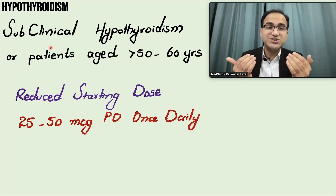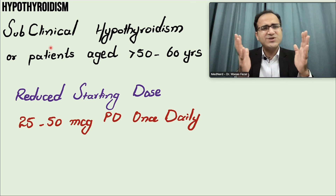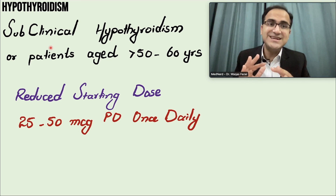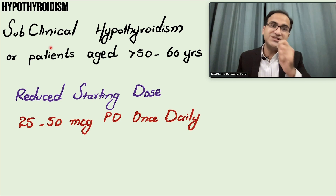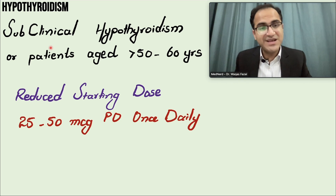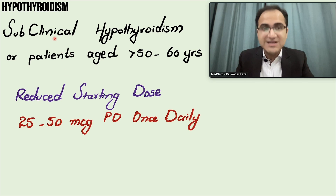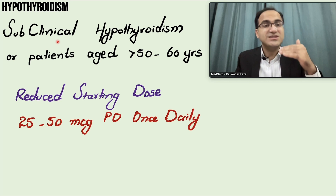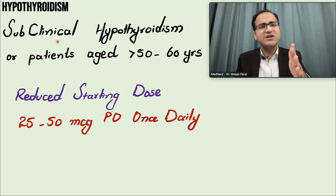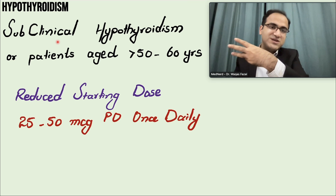For subclinical hypothyroidism: follow up in 4 to 6 weeks and repeat TSH. If TSH is ≥10 mIU/L, treat the patient. If TSH is less than 10 but the patient has cardiac risk factors, is planning surgery, or has positive thyroid peroxidase antibodies, also treat. Begin with a reduced starting dose of 25 to 50 mcg orally once daily. If TSH normalizes, no treatment is needed; monitor annually.